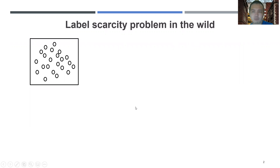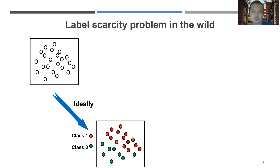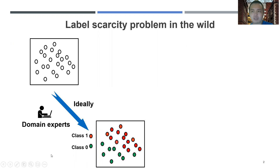First of all, we want to note that in order to learn a good machine learning model, it's essential to have a large amount of training samples which are properly labeled. However, it's very difficult to obtain such training datasets for many scientific domains, like the medical domain, because in those domains, labeling the training samples typically involves efforts from domain experts, and asking domain experts to label large amounts of training samples can be very time-consuming and expensive.